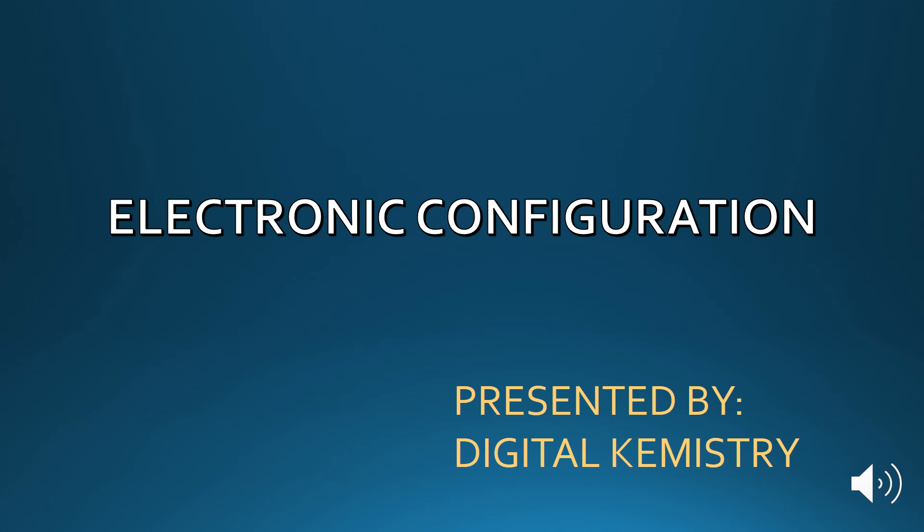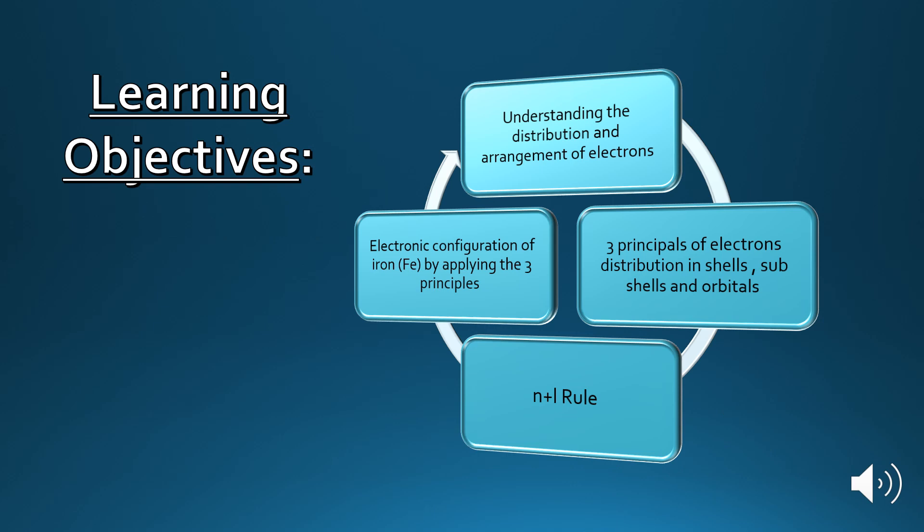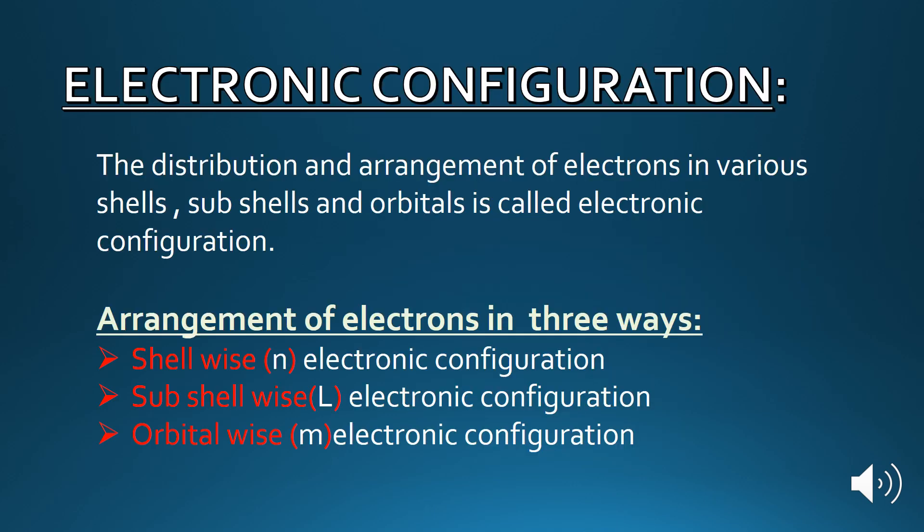Welcome to electronic configuration. The learning objectives of this video are: understanding the distribution and arrangement of electrons, three principles of electron distribution in shells, subshells, and orbitals, the n plus l rule, and the electronic configuration of iron by applying the three principles. The distribution and arrangement of electrons in various shells, subshells, and orbitals is called electronic configuration. This arrangement of electrons is done in three ways: shell-wise, subshell-wise, and orbital-wise.